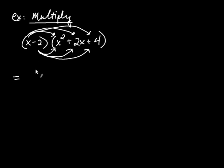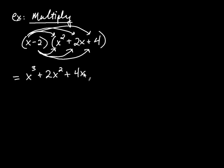So let's calculate all six products. x times x squared is x cubed. x times positive 2x is plus 2x squared. x times positive 4 is plus 4x. Then negative 2 times x squared is negative 2x squared. Negative 2 times positive 2x is negative 4x. And negative 2 times positive 4 is negative 8.